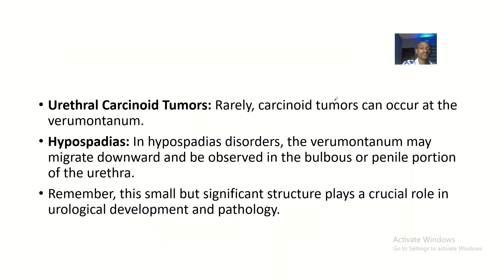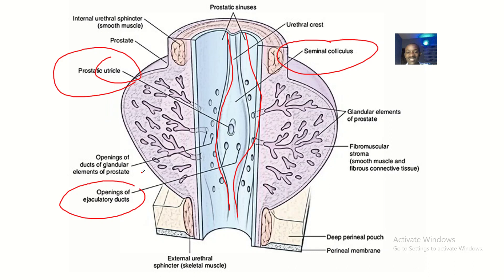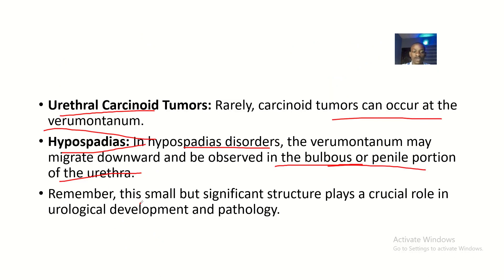Inside the prostate gland at the seminal colliculus you have the prostatic utricle, the ejaculatory ducts, and the prostatic ducts. Regarding further clinical significance: rarely, a carcinoid tumor can occur at the verumontanum. In hypospadias disorders, the verumontanum may migrate downward and be observed in the penile portion of the urethra, instead of remaining in the prostatic portion.